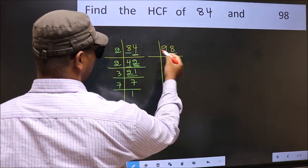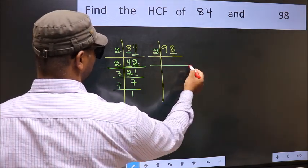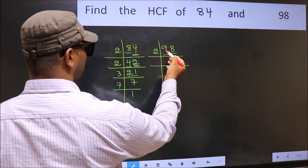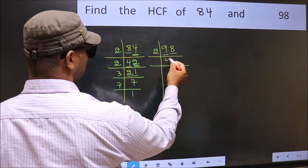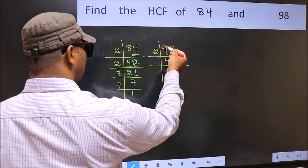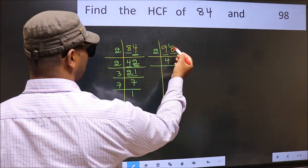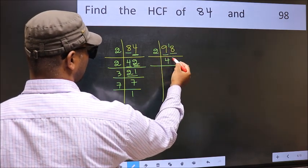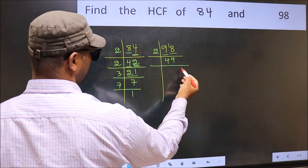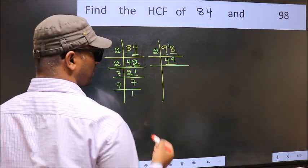Last digit 8 is even, so take 2. First number 9. A number close to 9 in 2 table is 2 times 4 is 8. 9 minus 8 is 1, 1 carried forward gives 18. When do we get 18 in 2 table? 2 times 9 is 18. Now we have 49.